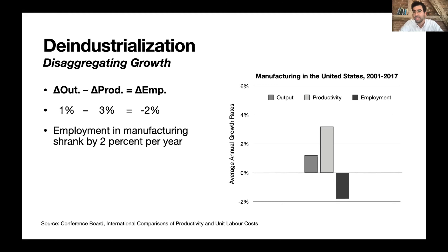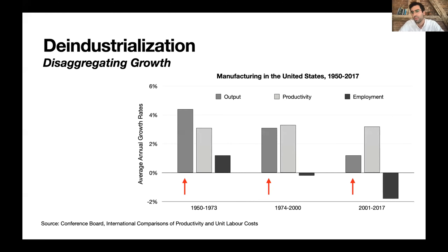This is the strong case for the automation account, repeated across many newspapers and academic articles: productivity is growing faster than output, so we can have more stuff with fewer workers. This is a technology-driven story. But if we zoom out a little, we get a different perspective.